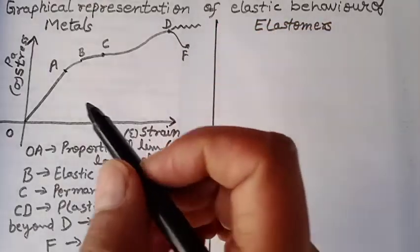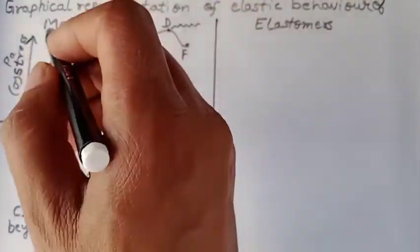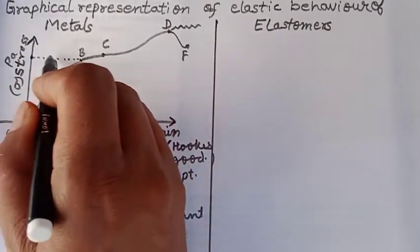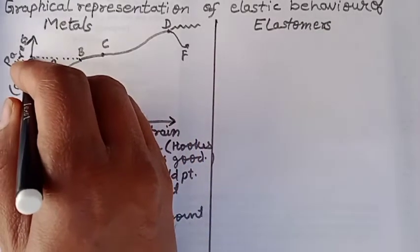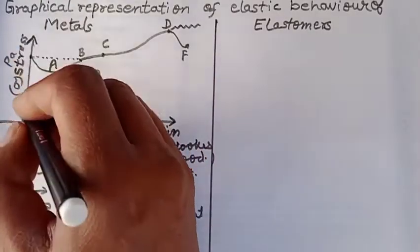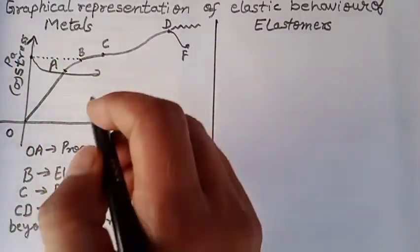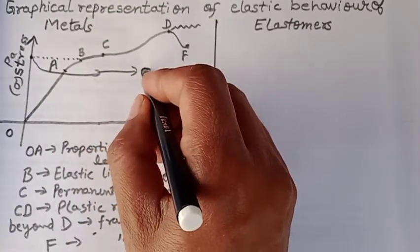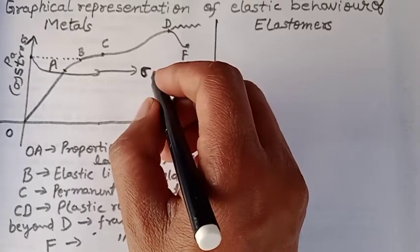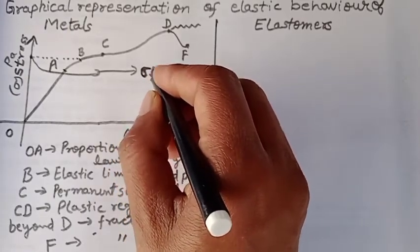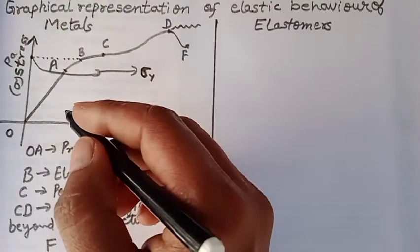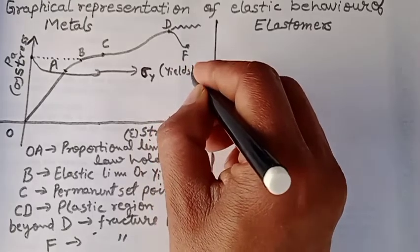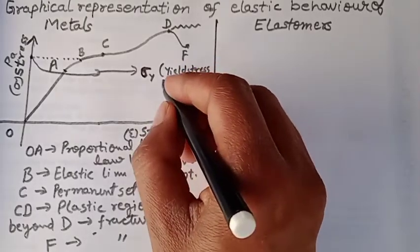There are some points which we have to mark. If we go horizontally from B, there is an interesting point. This value of stress corresponding to this point is called yield stress, sigma y (σy). We call it yield stress or yield strength.